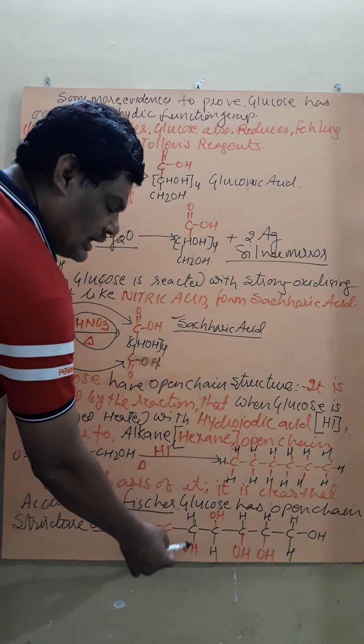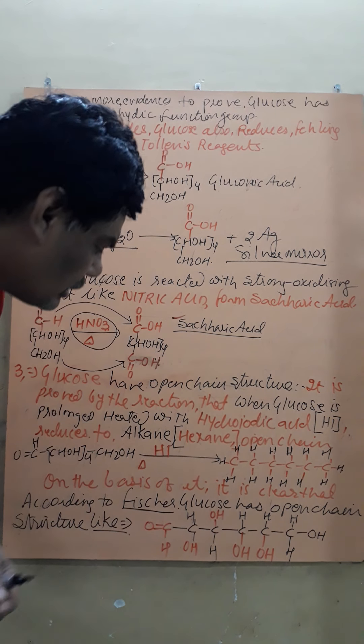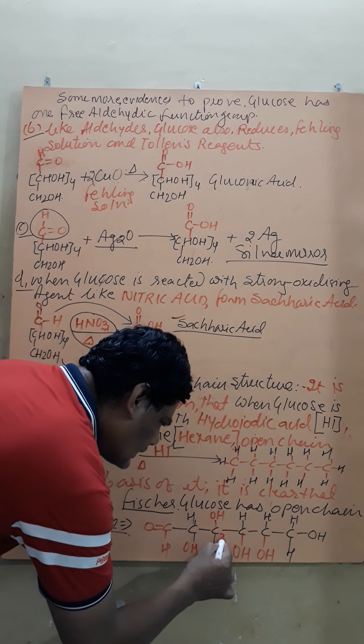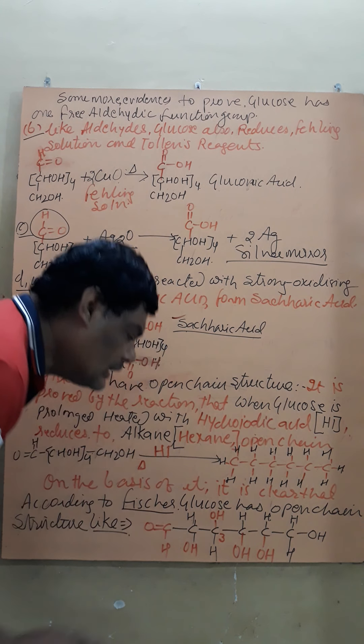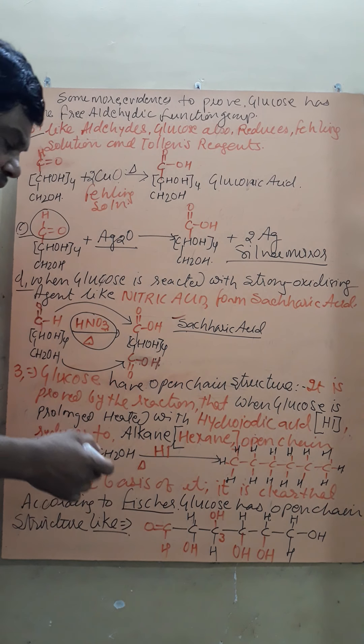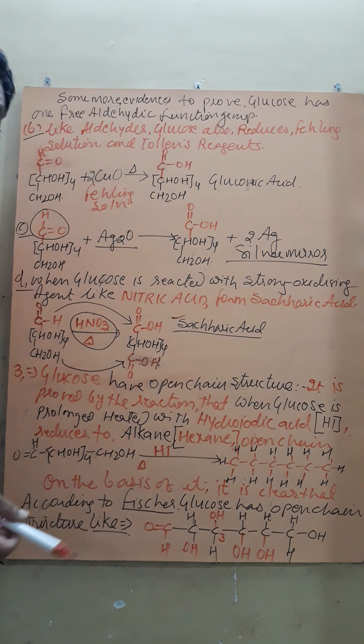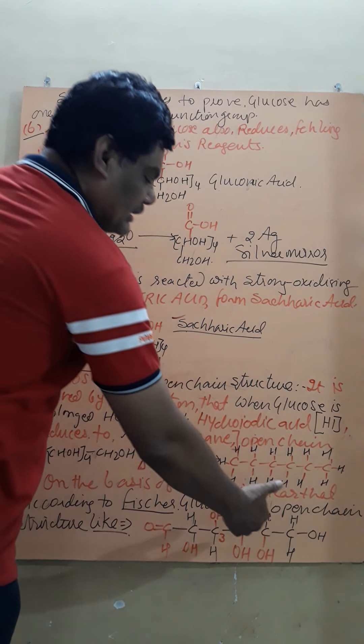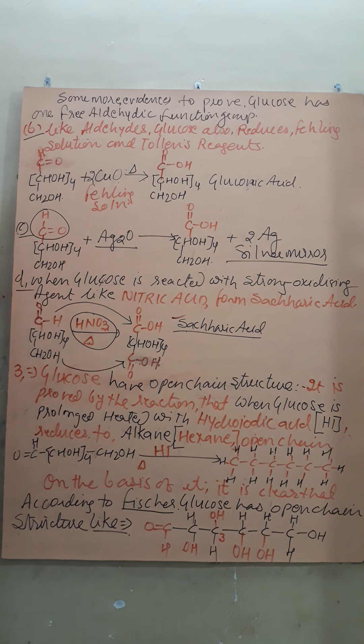Like CHO, CHOH, CHOH... The third number carbon has some different arrangement of OH because glucose is an optically active substance. Therefore, it shows optical activity with asymmetric carbons. We will see in next video. So this is the open chain structure of glucose.